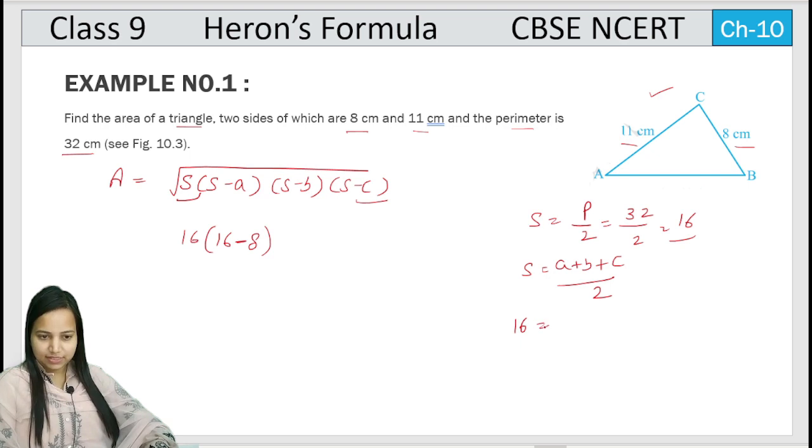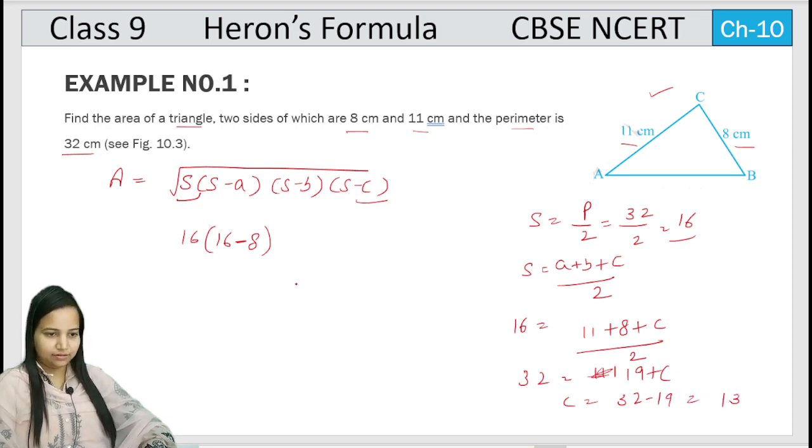So S value is 16. Then A is 11, another side is B which is 8, and C value, the third side we will find from here. So it becomes 11 plus 8 is 19 plus C. So C value is 32 minus 19, which is 13. Right. So C value we got 13.